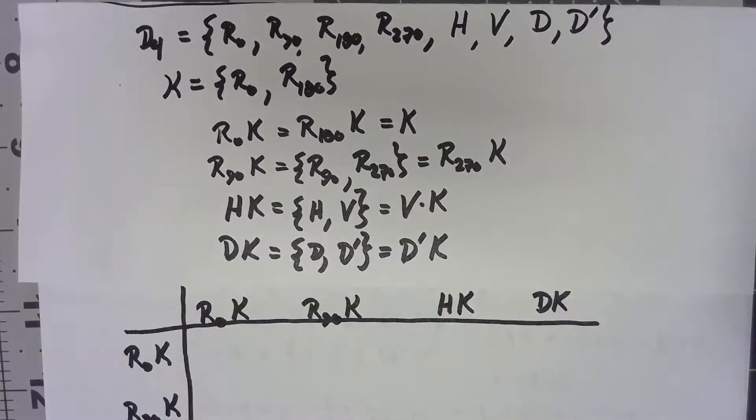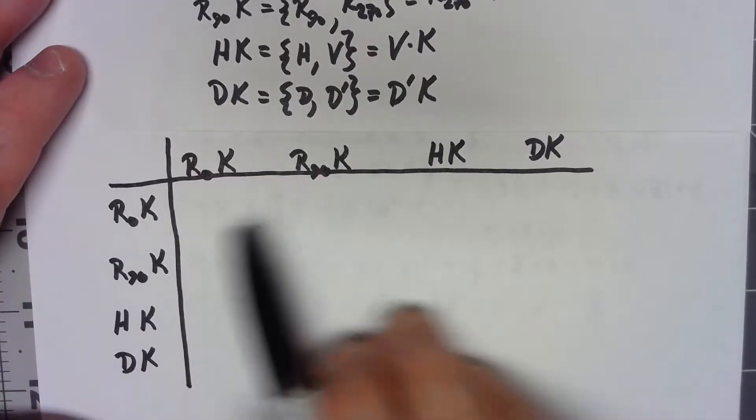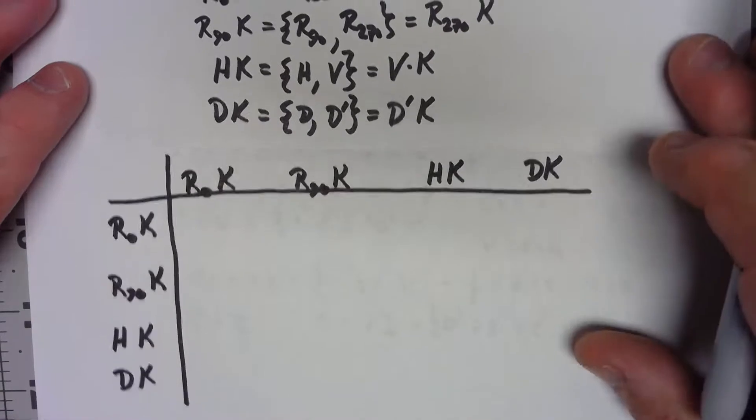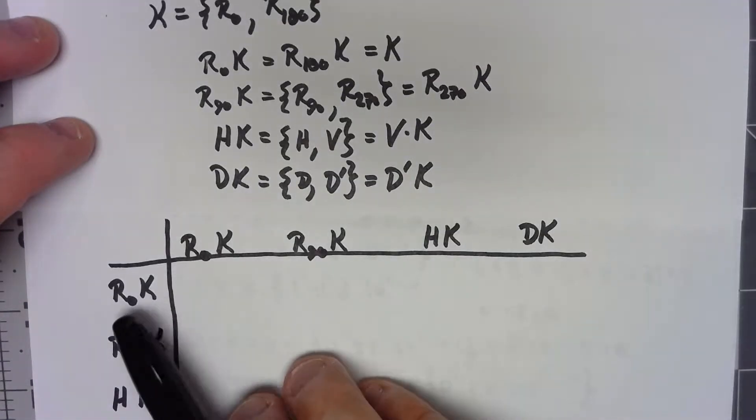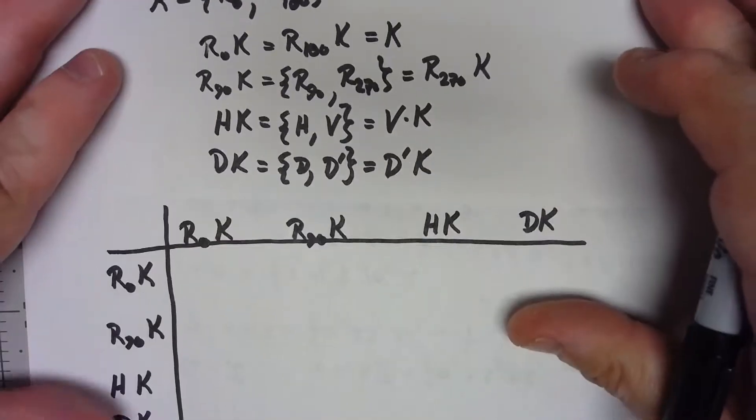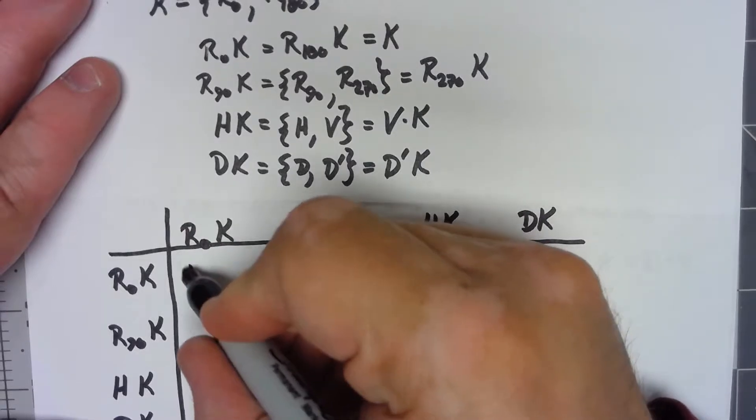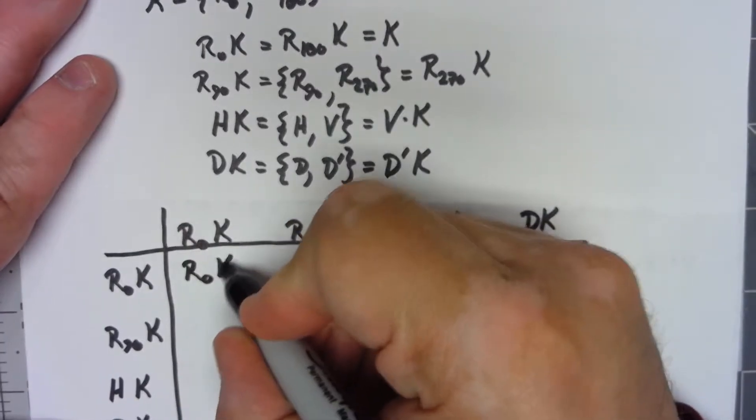So if I'm going to create this factor group, the Cayley table will have those four elements each way. And so to do R0K times R0K, again it's going to be something times K. R0 times R0 is R0, so this is R0K.